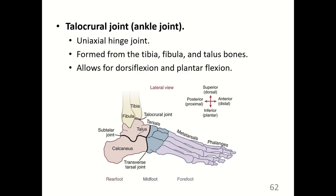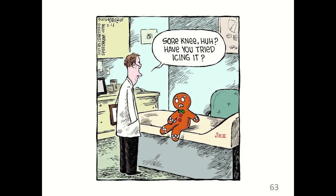The last joint is the talocrural joint, where 'crural' refers to the anterior lower leg. The tibia, fibula, and talus — one of the tarsal bones — articulate here, allowing dorsiflexion, pointing the toes toward the sky, and plantarflexion, pointing the toes toward the floor. When standing on tiptoe, the joints between the metatarsals and phalanges serve as the fulcrum supporting the weight.